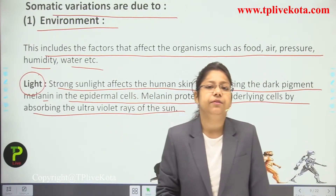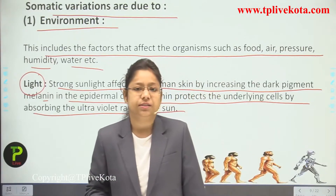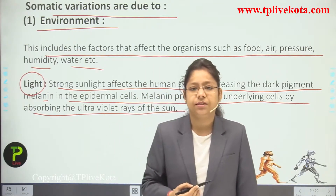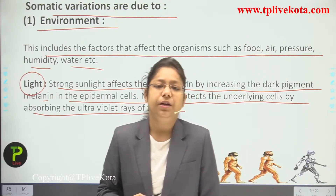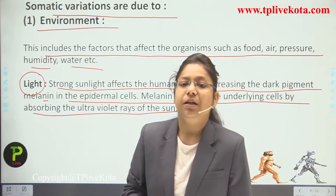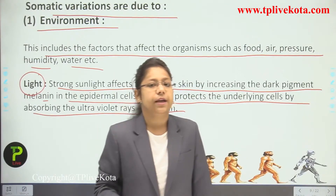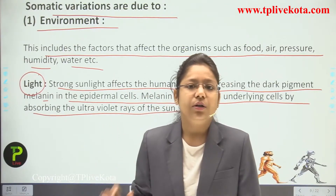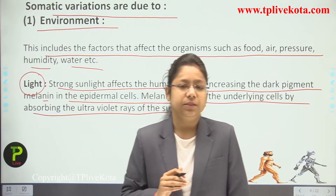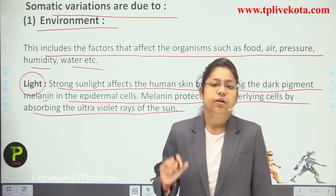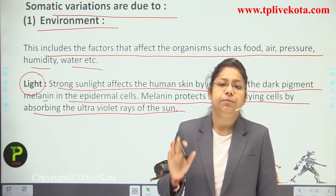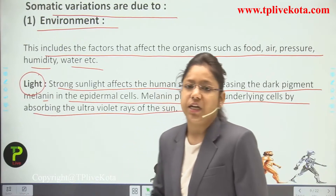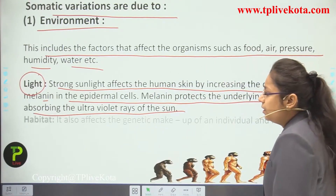If living in an environment with much sun exposure, dark skin develops because of the melanin pigment under the epidermal layer of skin. But if living in a cold environment with less sunlight, fair skin develops because melanin pigment will be lesser. This is just somatic variation occurring due to the external environment.